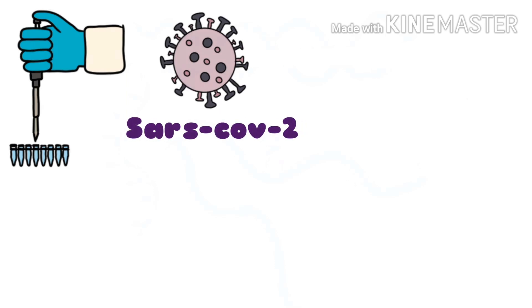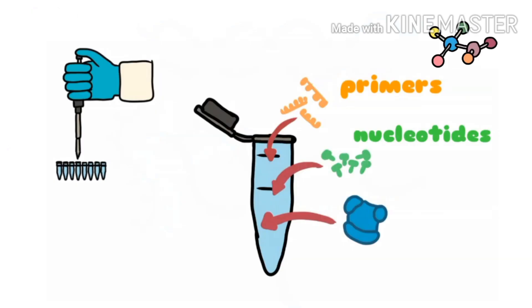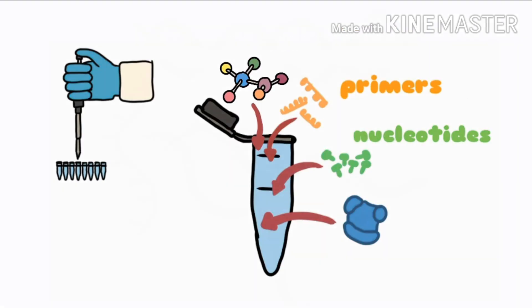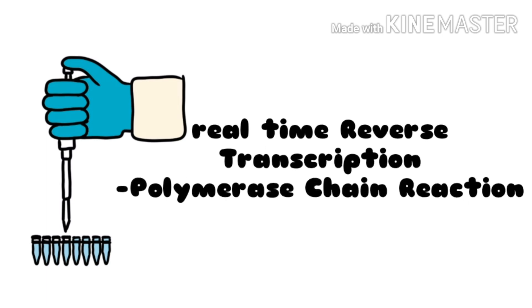meaning the amplification is monitored during the reaction, not at its end like in a normal PCR. This is done by adding some light-sensitive molecules in the mixture called fluorophores. Hence, it's called the real-time reverse transcription polymerase chain reaction. After the PCR, the results can be analyzed.